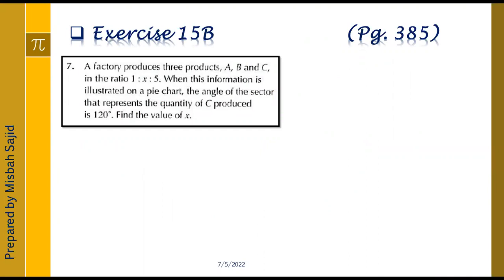Question number 7 is: a factory produces 3 products A, B and C in the ratio 1 : X : 5. This information is distributed on a pie chart. The angle of the sector that represents the quantity of C produced is 120 degrees. Find the value of X.